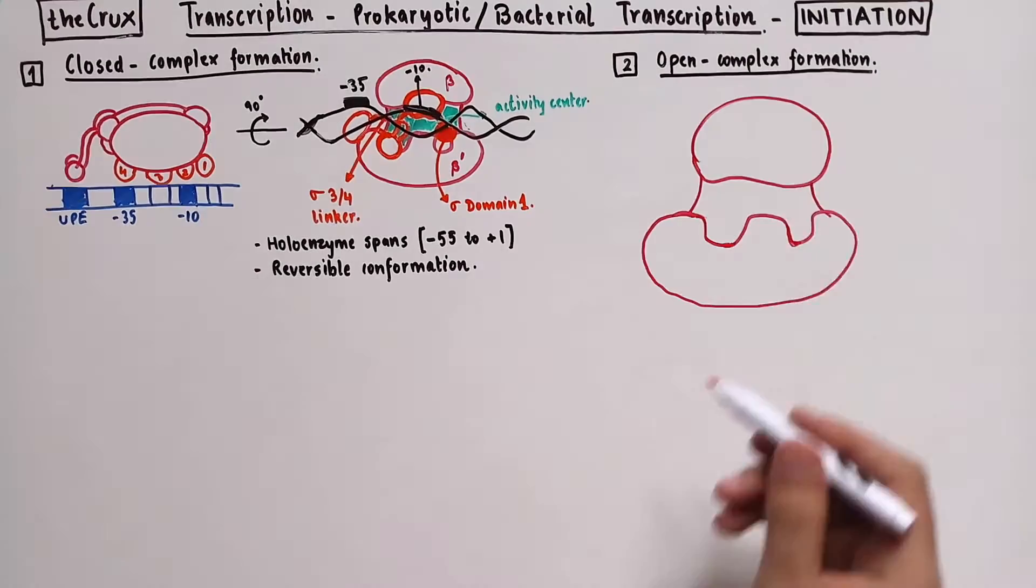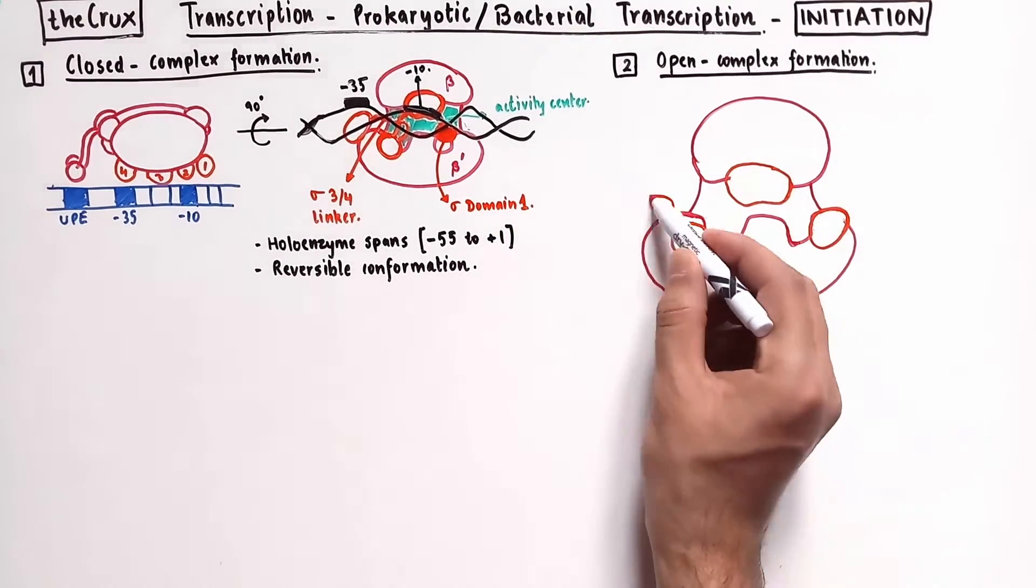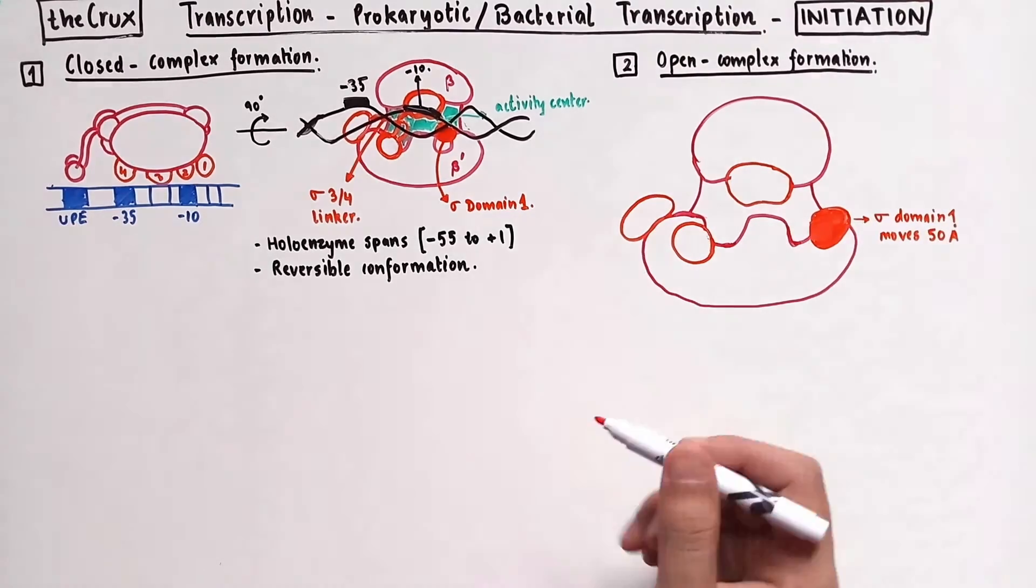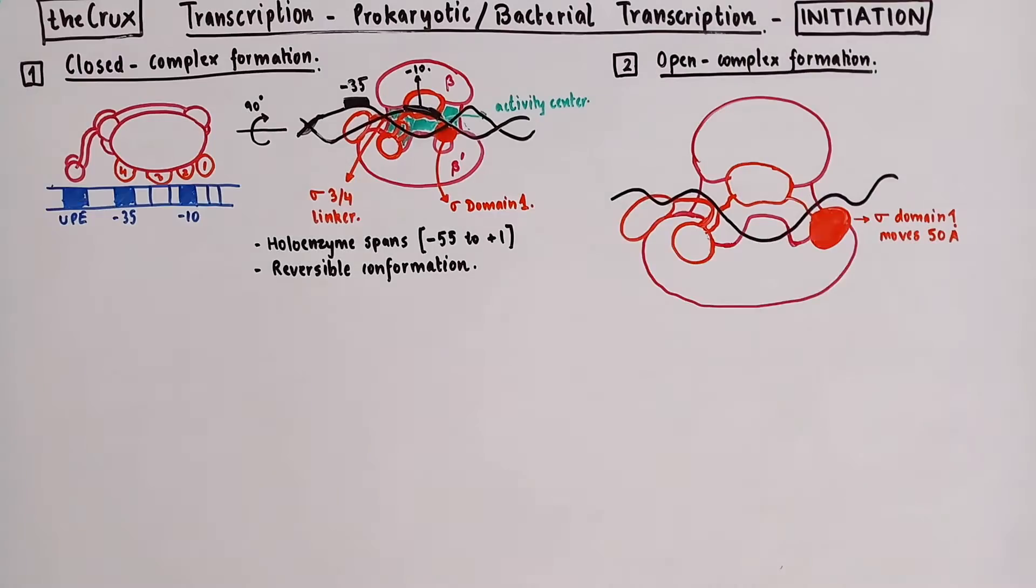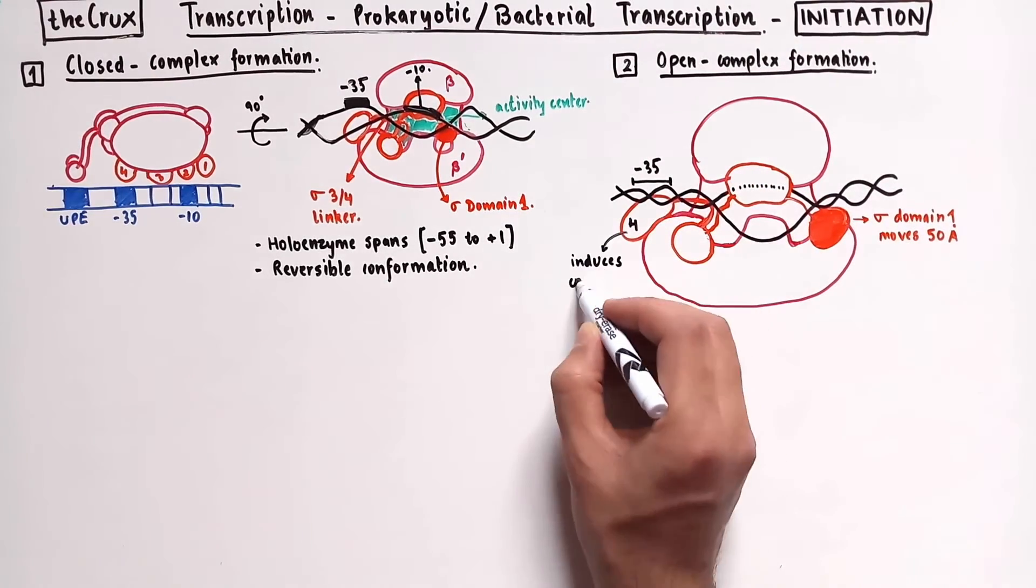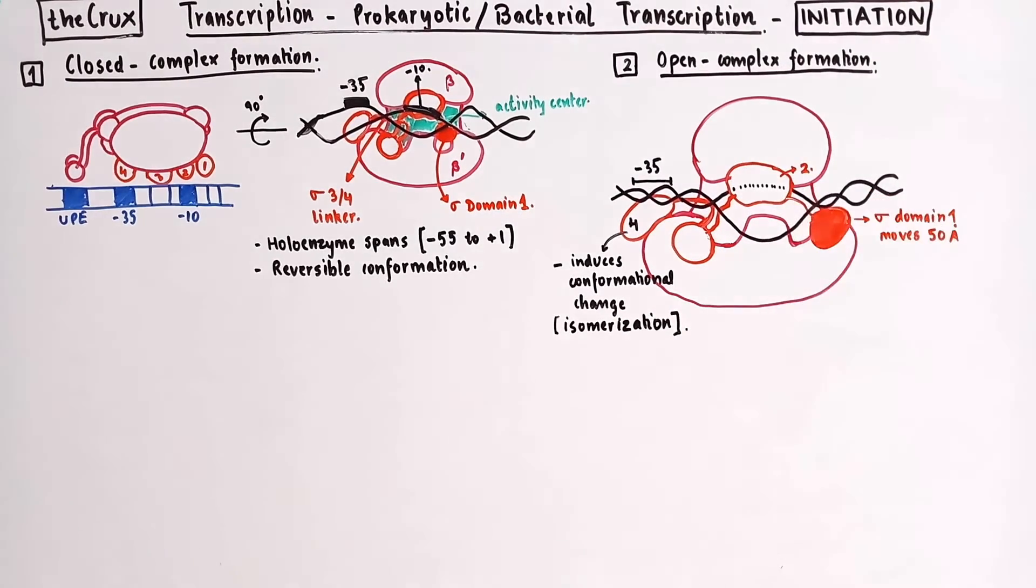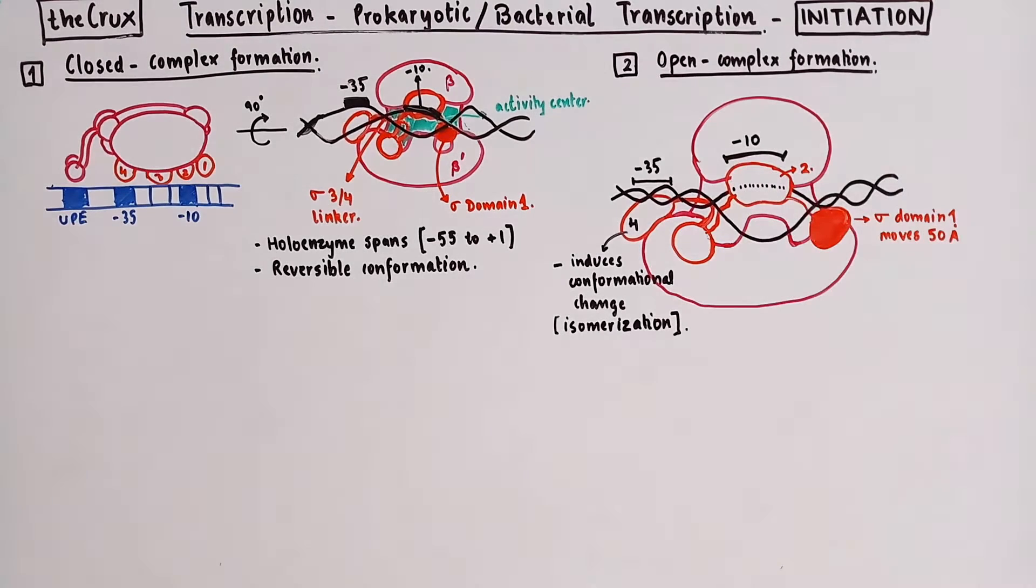In this stage, we see that the domain 1 of sigma factors moves out of the activity center by about 50 angstroms, thereby unblocking it. Another important transition that happens in this stage is the conformational change, also known as the isomerization of the sigma factor. As a consequence of this isomerization, the domain 2 unwinds or melts the double-stranded DNA at the negative 10 element.